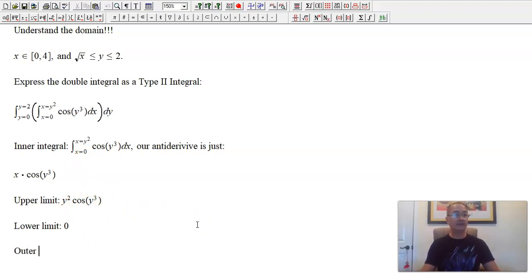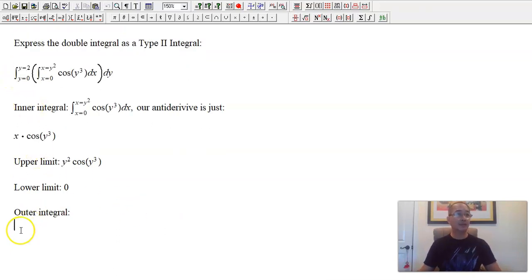So now we are ready to plug in our limits. So our upper limit is x equals y squared. So replace x with y squared. We just get y squared times cosine y cubed. Lower limit is zero, so just get zero. Remember, we're multiplying cosine y cubed with x. Multiply by zero, we get zero. So therefore, our outer integral becomes y goes from zero to two. And the only thing that we have is y squared cosine y cubed. So we cleared step one, find the inner integral. How about step two, the outer integral? Is this something that we can integrate? I do believe yes.